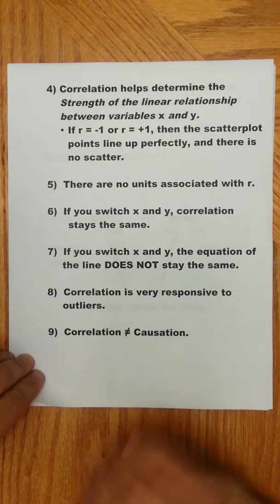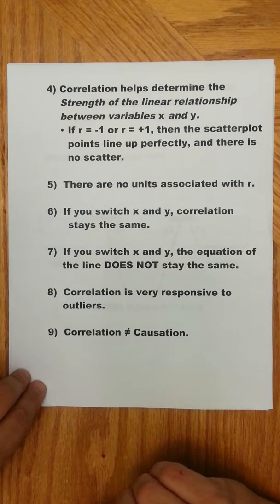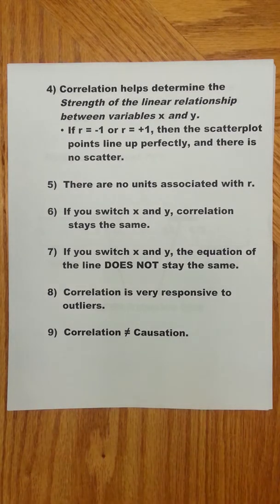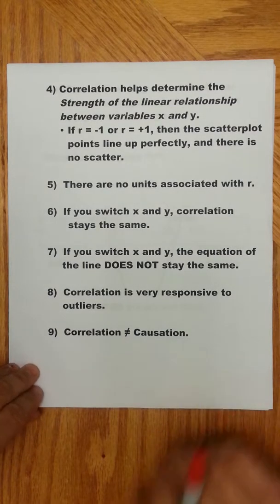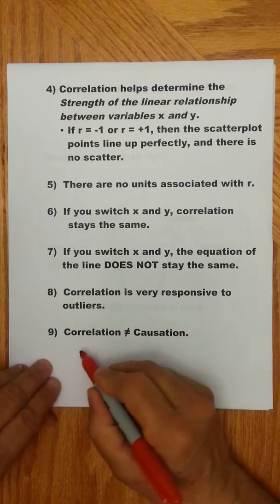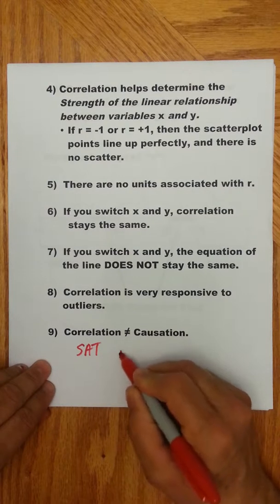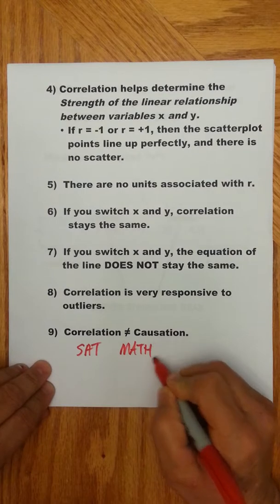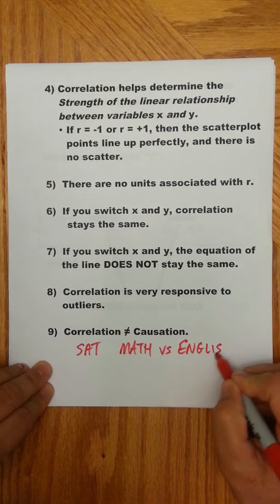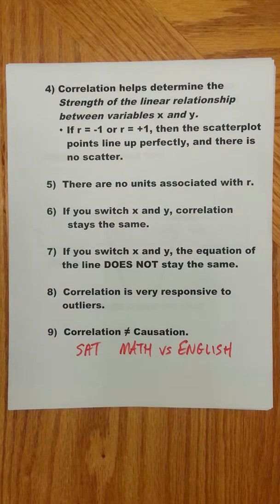If you switch X and Y, the correlation stays the same, because, again, you're measuring the strength of the scatter, right? And that stays the same. However, if you switch X and Y, the equation on the line does not stay the same. So you just have to be careful there. Correlation is very responsive to outliers, right? And here, very specifically, number 9 is extraordinarily important. Correlation does not equal causation.